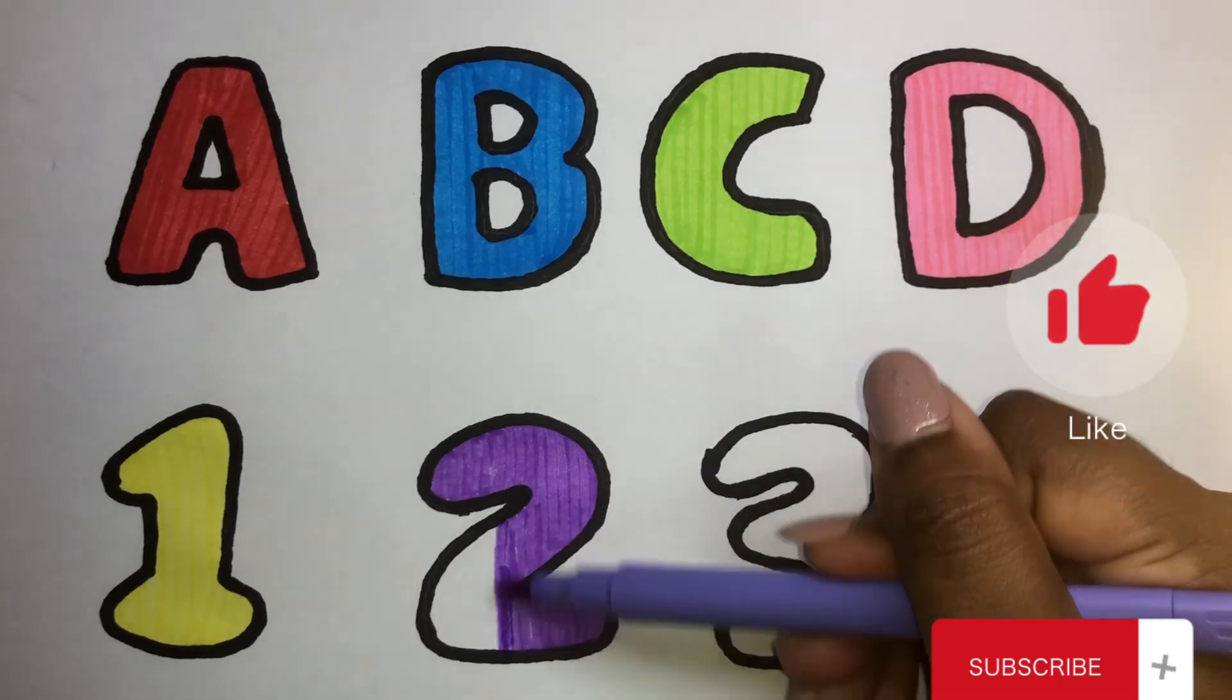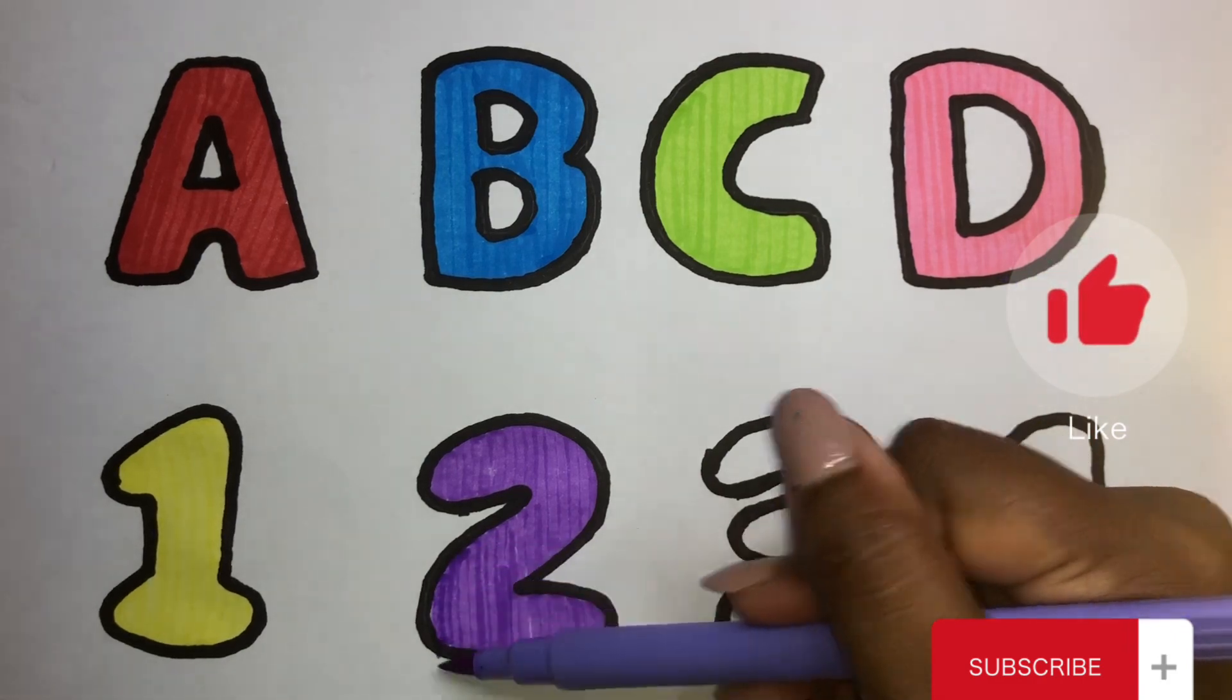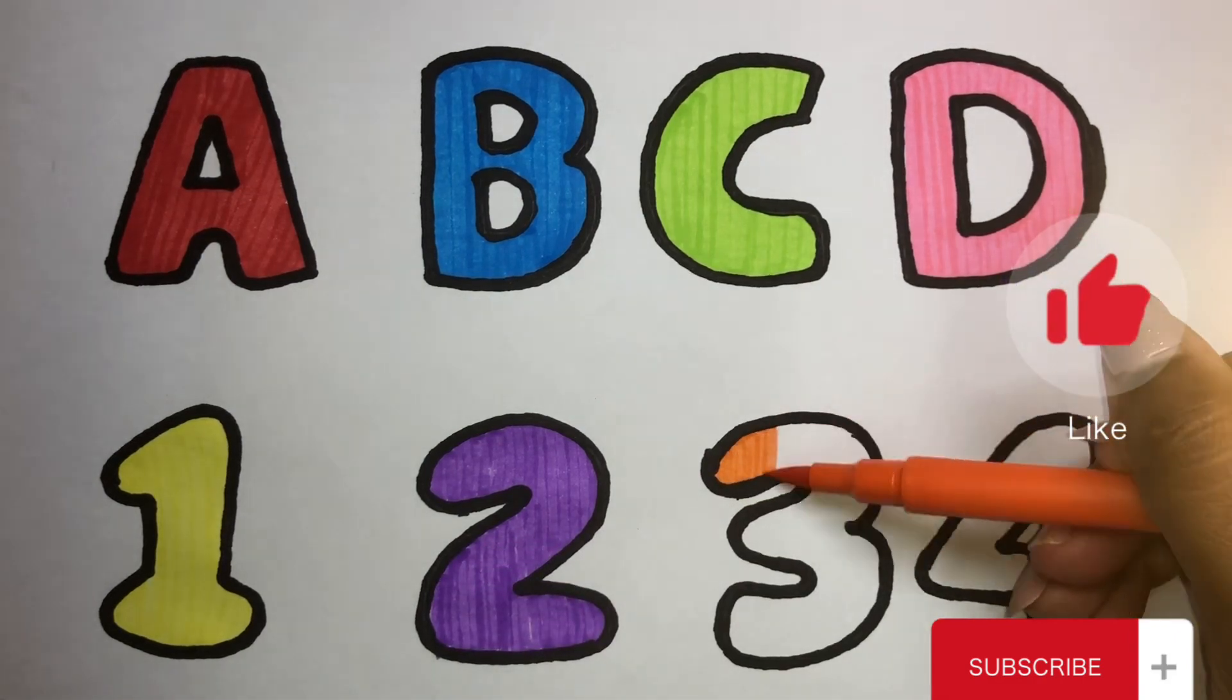One, two, three, four, five, six, seven, eight, nine, ten. Orange color.